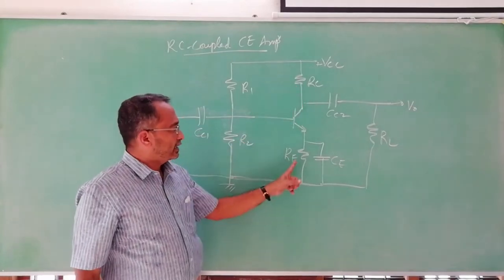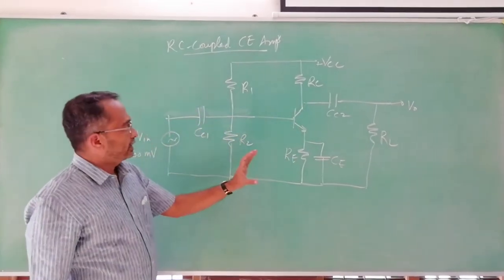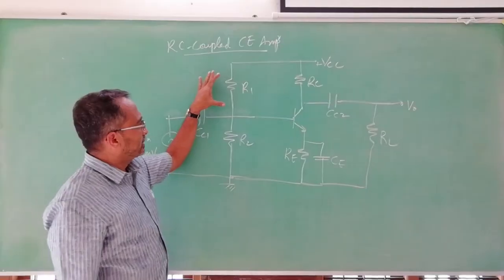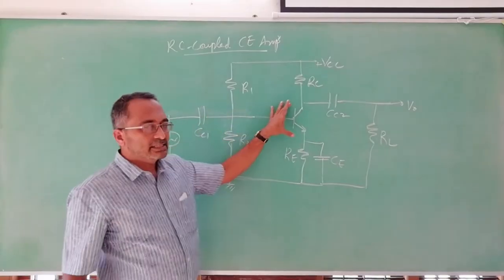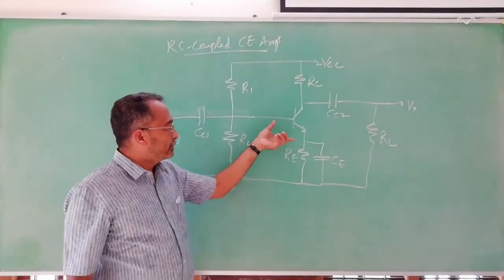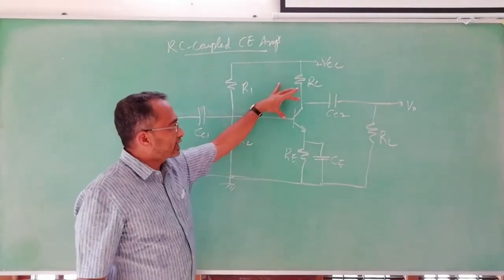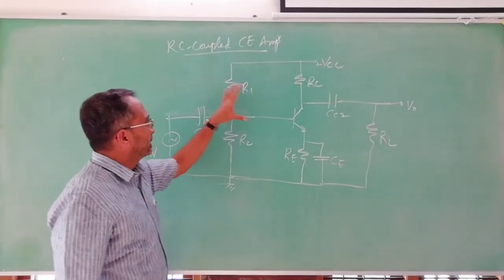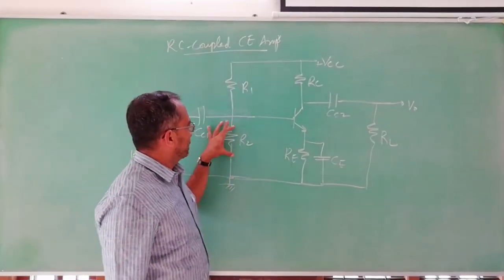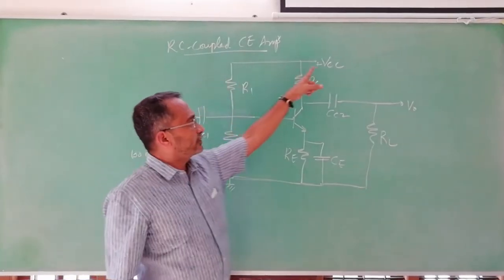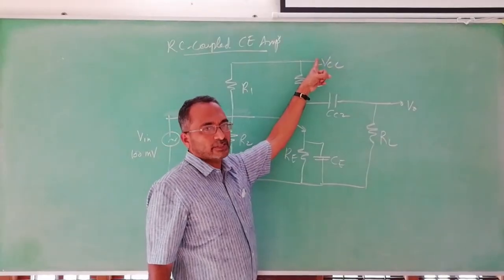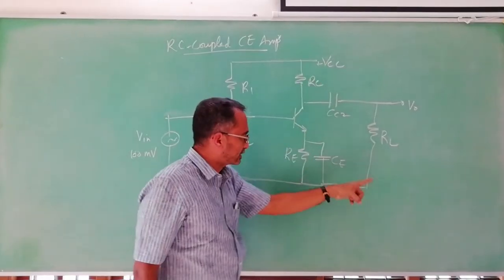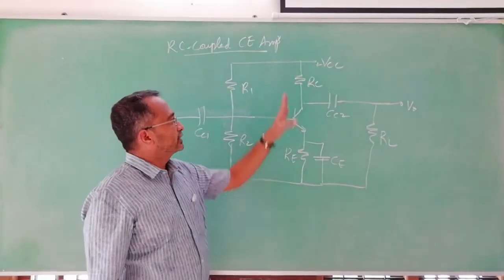These two R1 and R2 are potential divider network. RC is collector resistance and RE is emitter resistance. The use of these R1 and R2 together make this transistor work in active region, emitter junction forward biased and collector junction reverse biased. The voltage for this is derived from this power supply where positive terminal is connected here and negative terminal is connected to earth, so that is plus VCC.